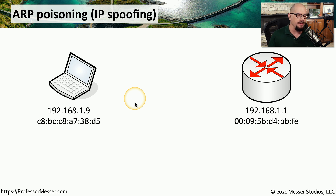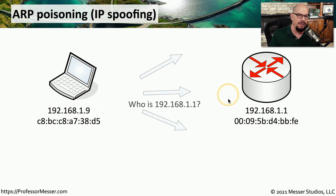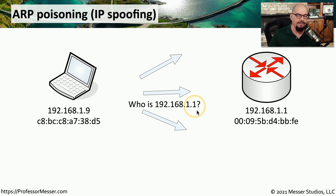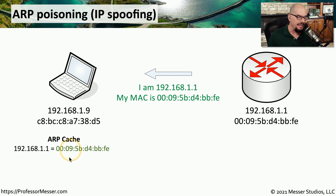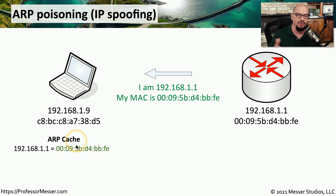With normal ARP communication, a device looking for another sends out a broadcast with the IP address it's looking for, hoping to get a MAC address in return. The device receiving that broadcast sends back a response saying you found the right IP address, and here is the MAC address of my device. That information is then saved by the original workstation into an ARP cache so it knows exactly where to send traffic for all subsequent communication.